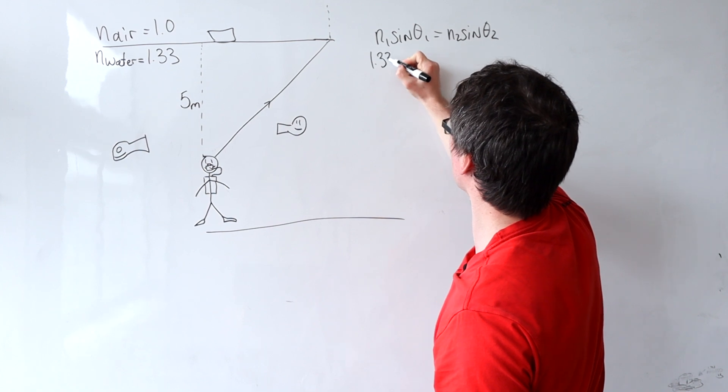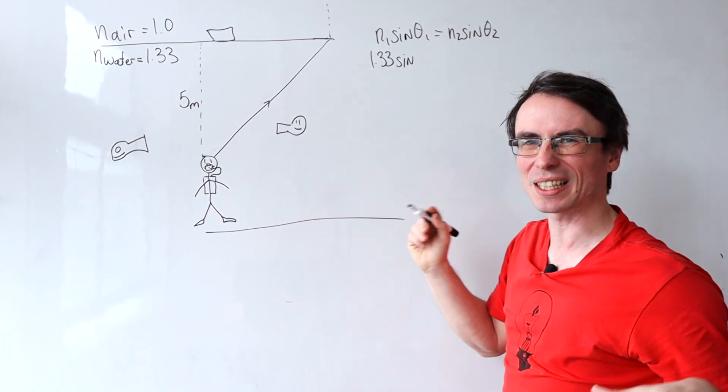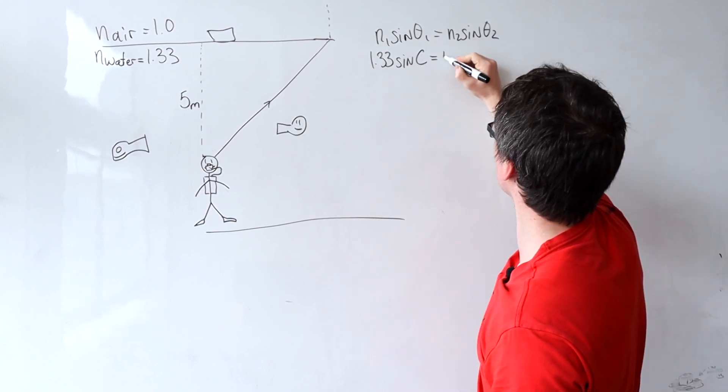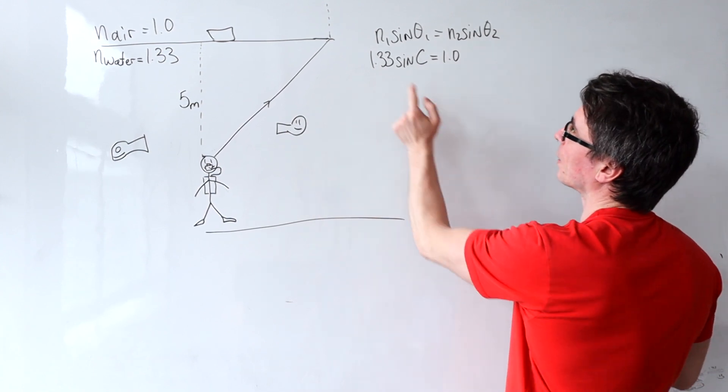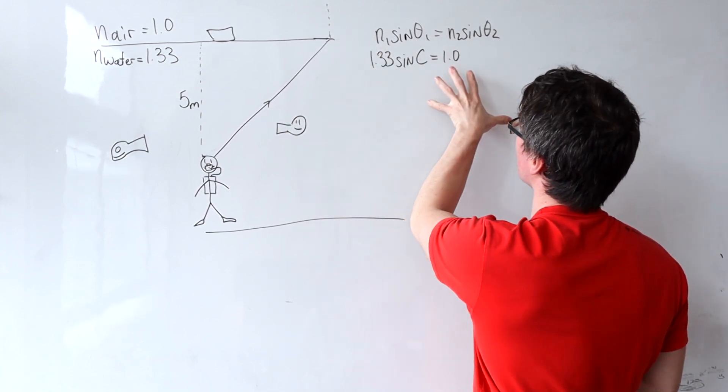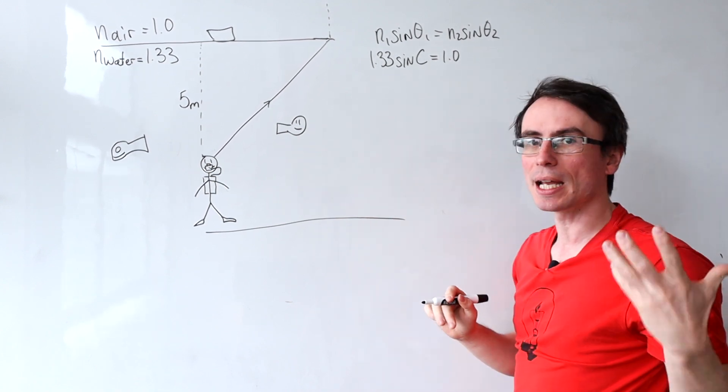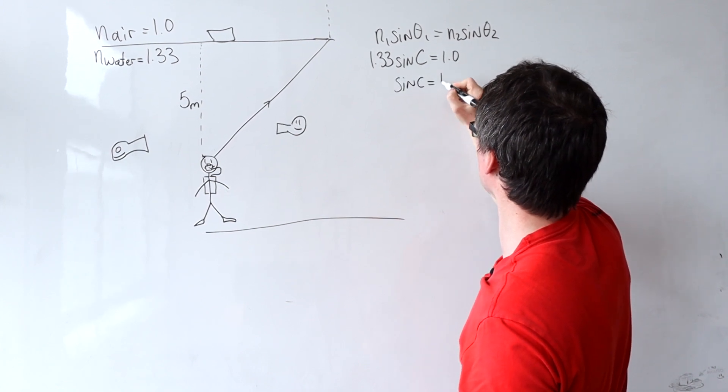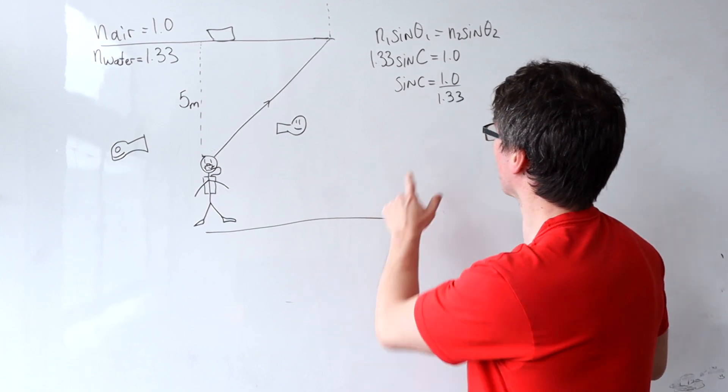N1 is 1.33 times sine of this angle. Let's call it the critical angle, typically C, equal to N2 which is just 1. We set this angle to be 90 degrees to the normal for the critical angle, and sine of 90 is just 1, so sine of the critical angle is 1.0 over 1.33.